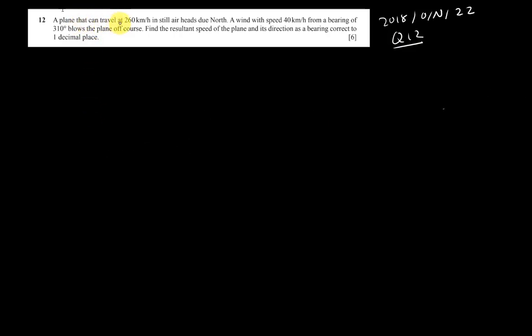So let's have a look at this question. In this question, a plane that can travel 260 km per hour in still air is heading due north. A wind with a speed of 40 km per hour from a bearing of 310 blows the plane off course. Find the resultant speed of the plane and its direction as a bearing, correct to one decimal place.